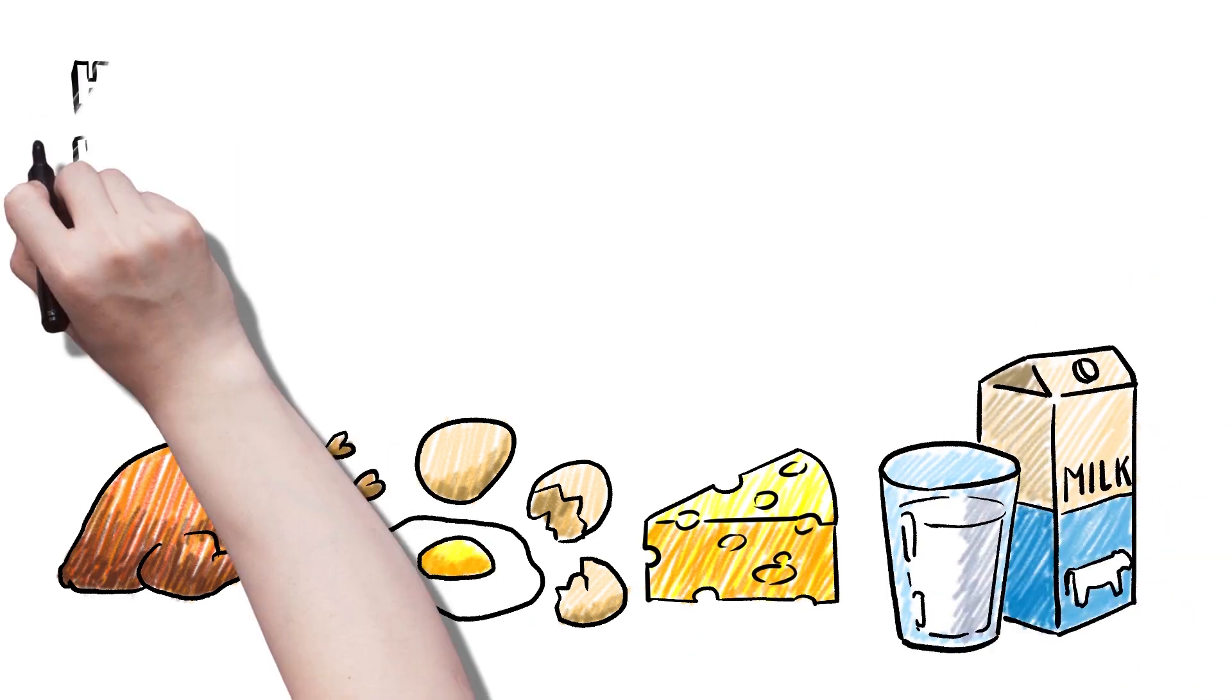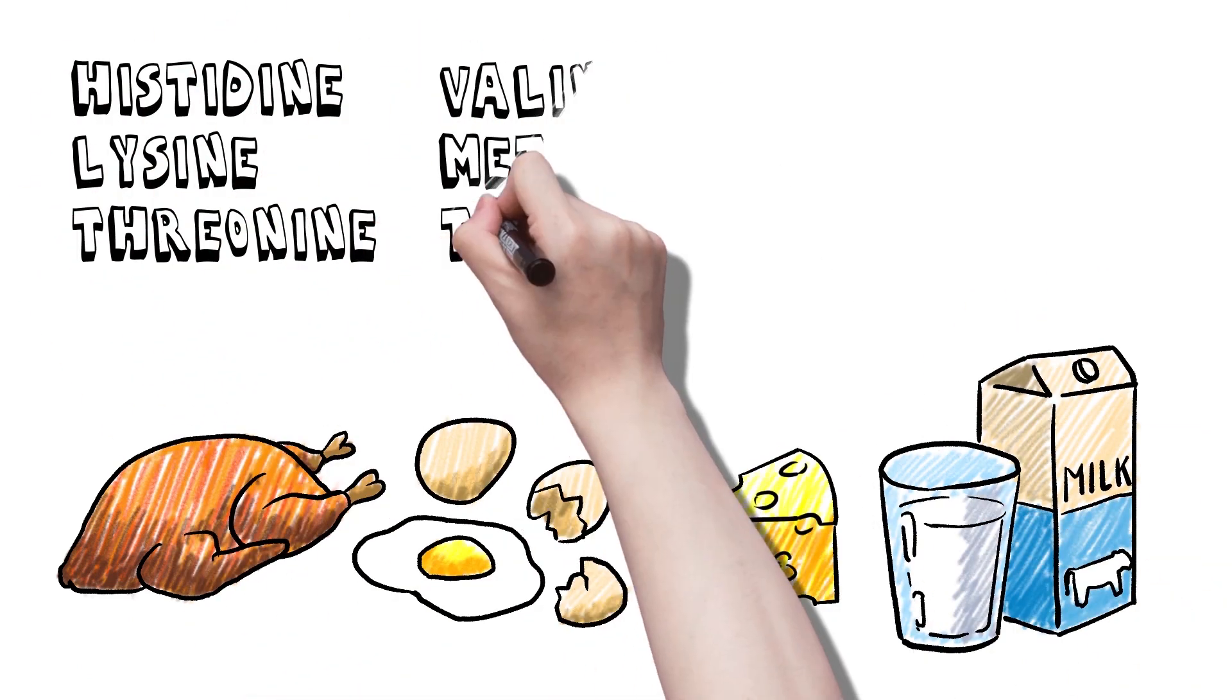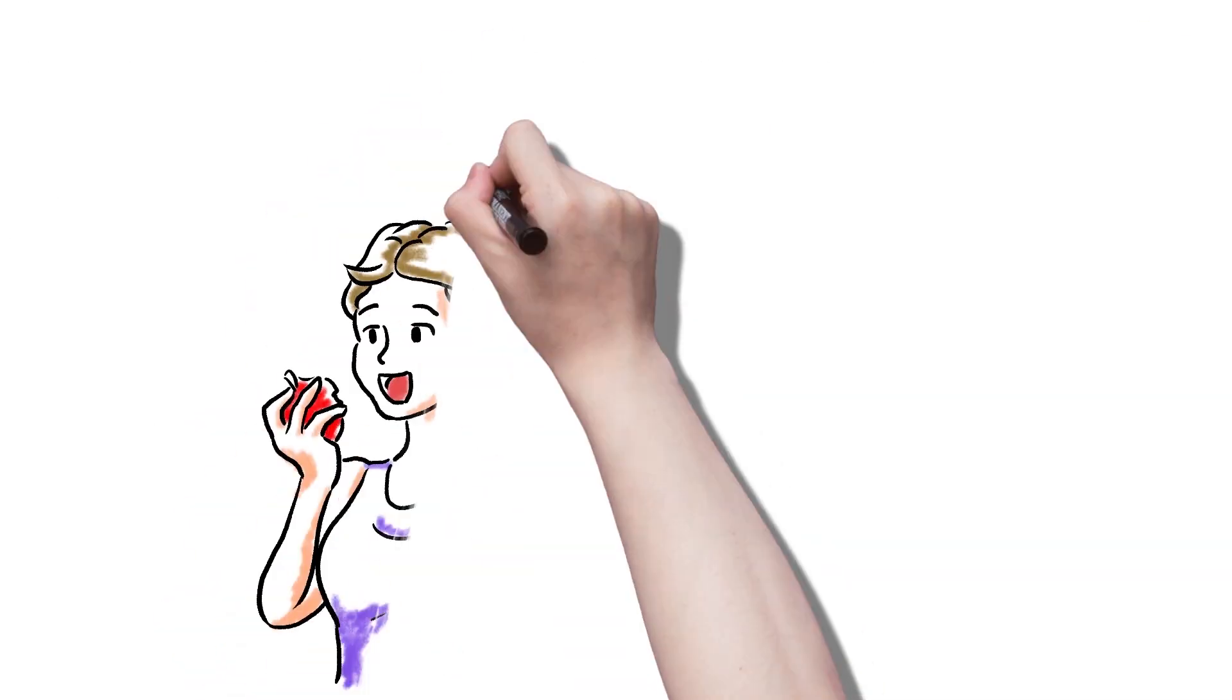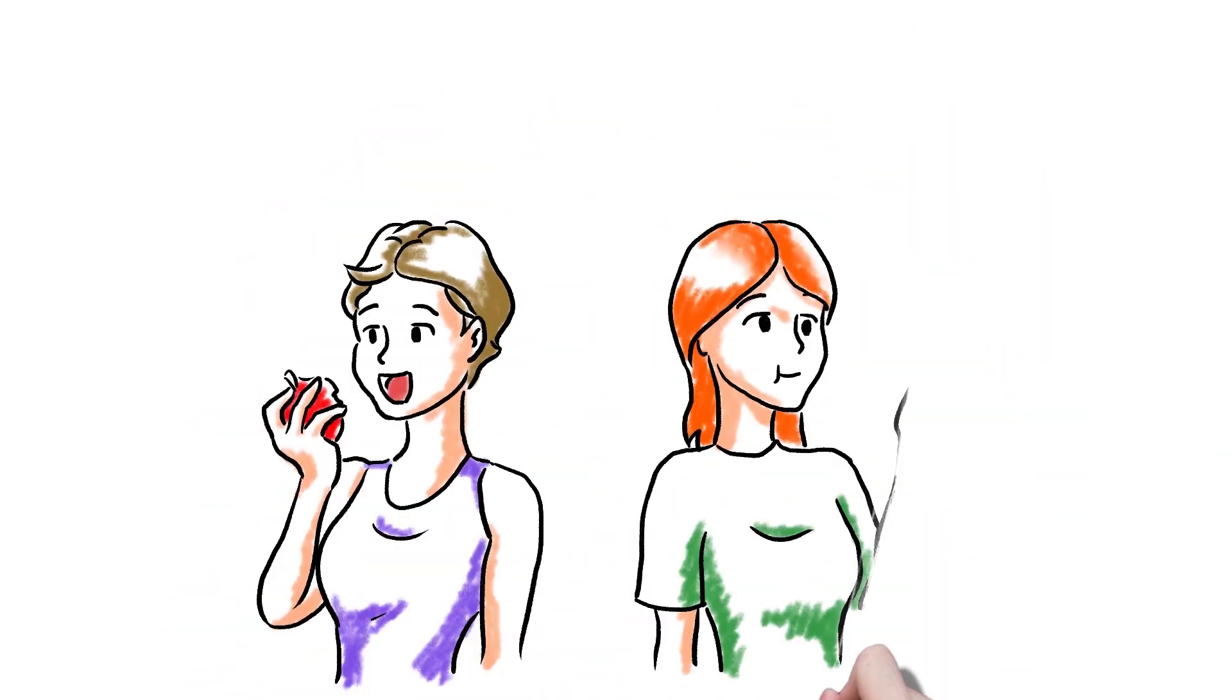Myth. To stay healthy, you need to get all 9 essential amino acids in a complete protein. Meat, eggs, and dairy are ideal sources. Fact.